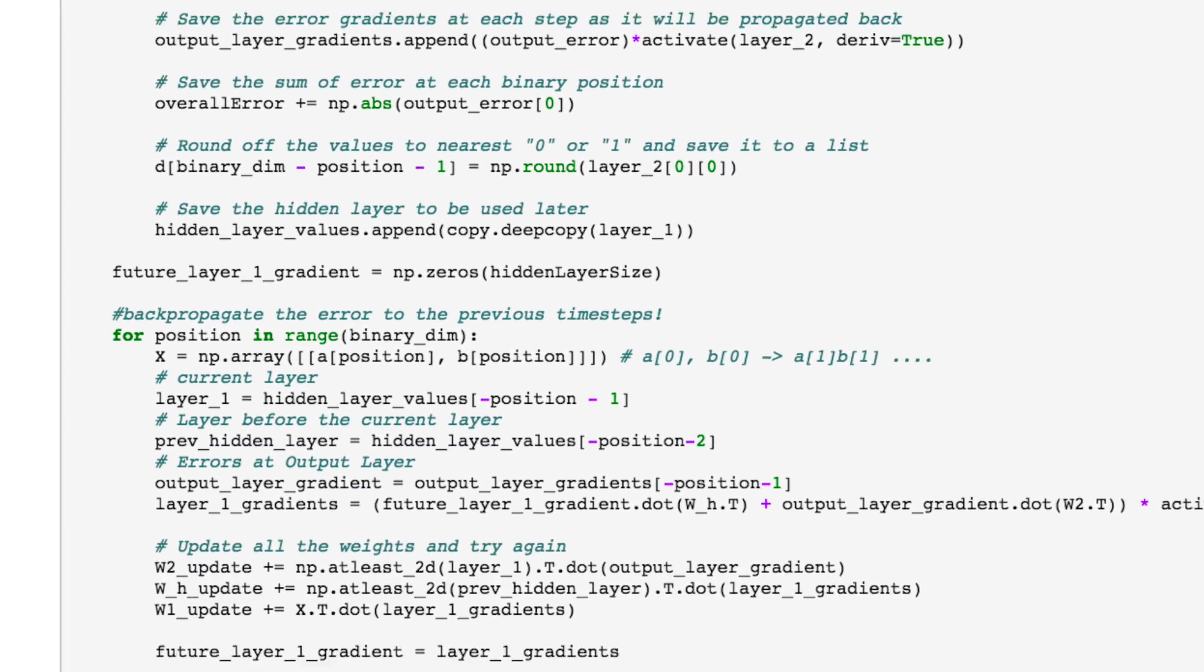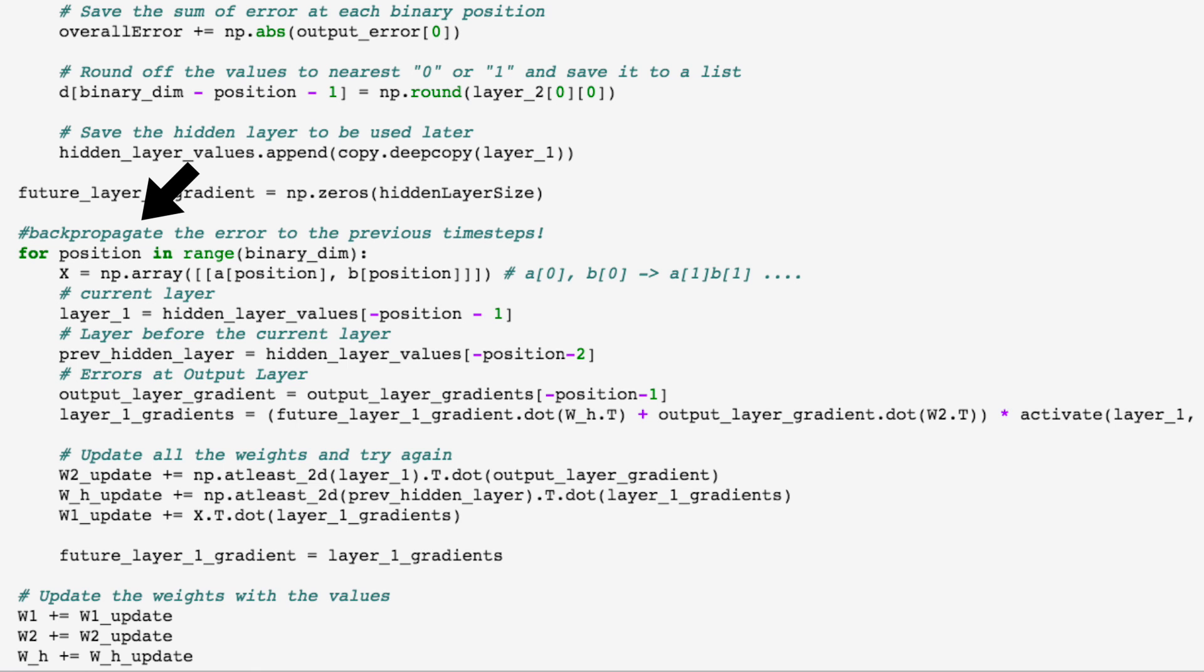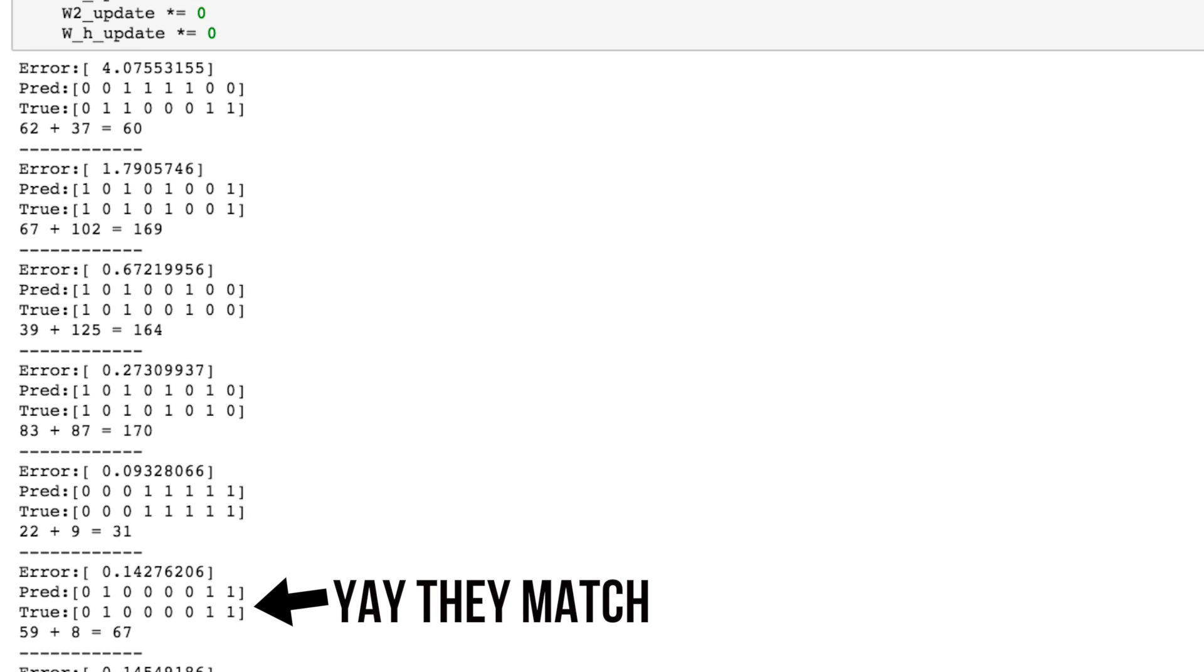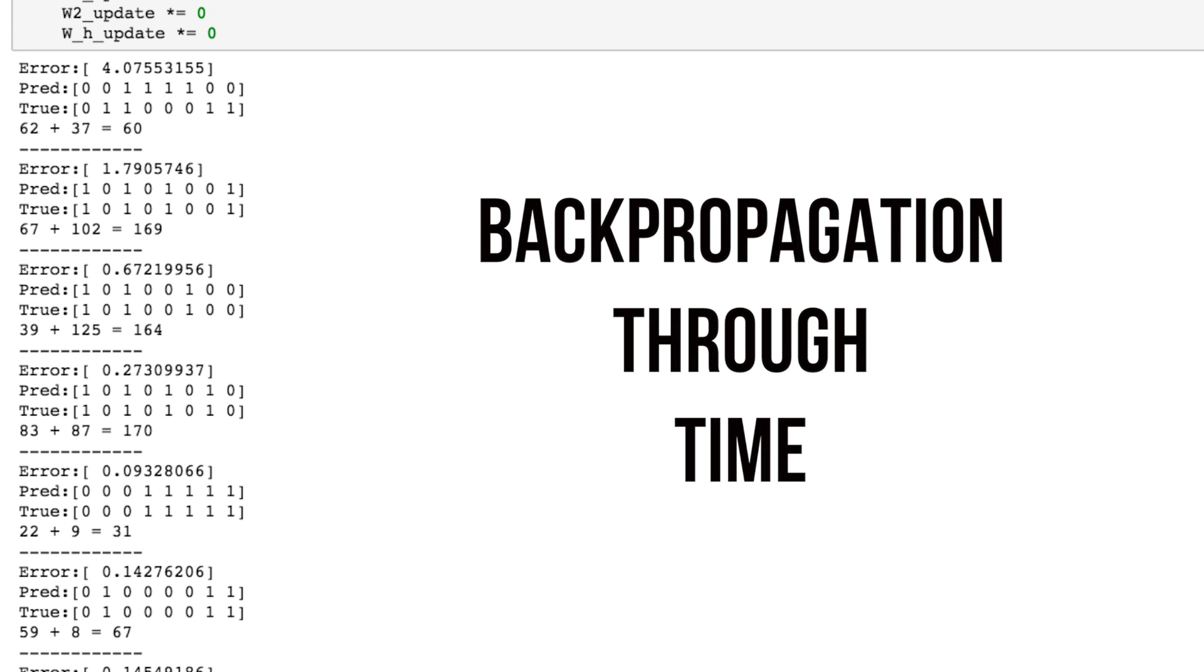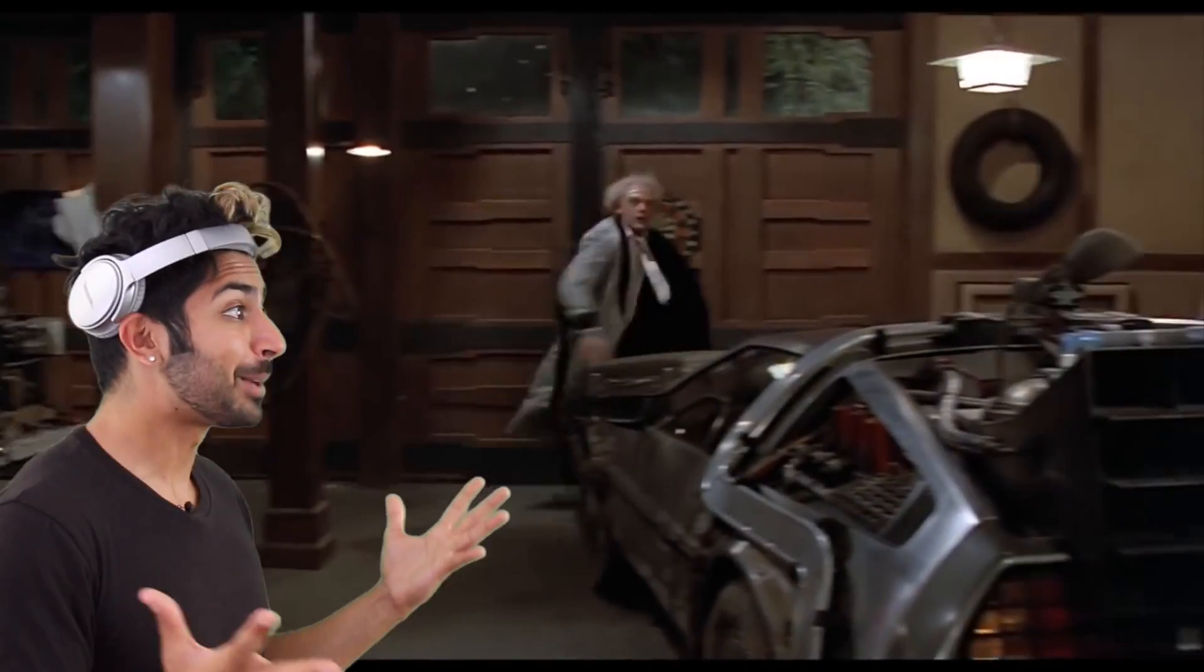Backpropagation, in this case, works the same way as in a feed-forward network. We calculate the gradients of our error with respect to the weights and use them to update the weights. But because recurrent nets are a temporal model, we call it backpropagation through time. Doc, let's backpropagate through time!